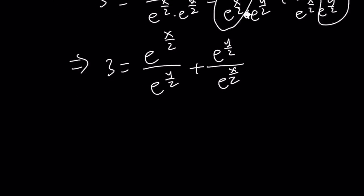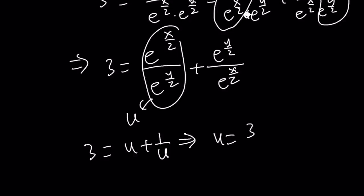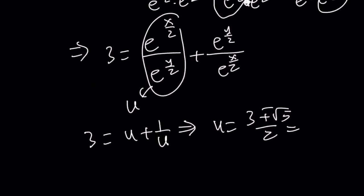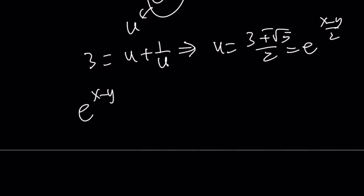So here's what we're going to do. We're going to call this u, and this is going to be 1/u. 3 equals u + 1/u. From here, to keep a long story short, u is going to be (3 ± √5)/2. But what is u? u is equal to e^((x-y)/2). But we're looking for e^(x-y). That is going to be e^((x-y)/2) squared. And that's going to be ((3 ± √5)/2)².